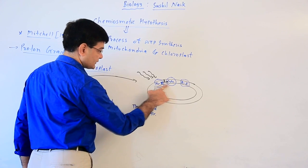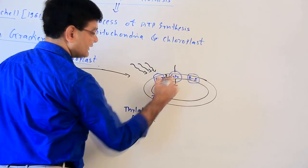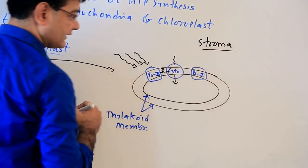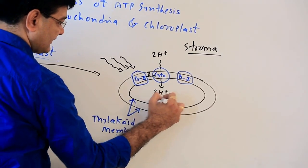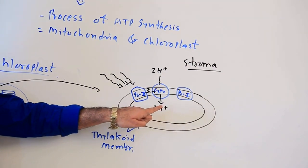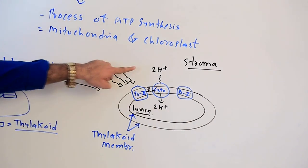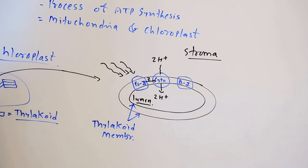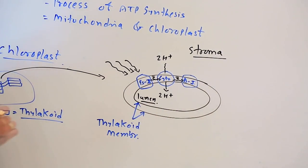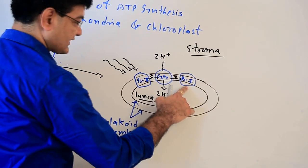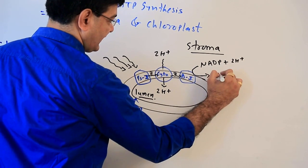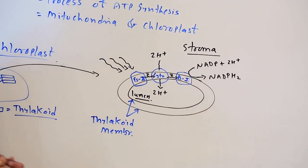When an electron passes from PS2 to cytochrome, it induces the opening of the hydrogen carrier molecule. As a result, 2H+ protons from the stroma — that is, outside the thylakoid — diffuse inside the lumen of the thylakoid. The electron then passes towards PS1, which activates NADP to react with 2H+ and form NADPH2 inside the stroma of the chloroplast.